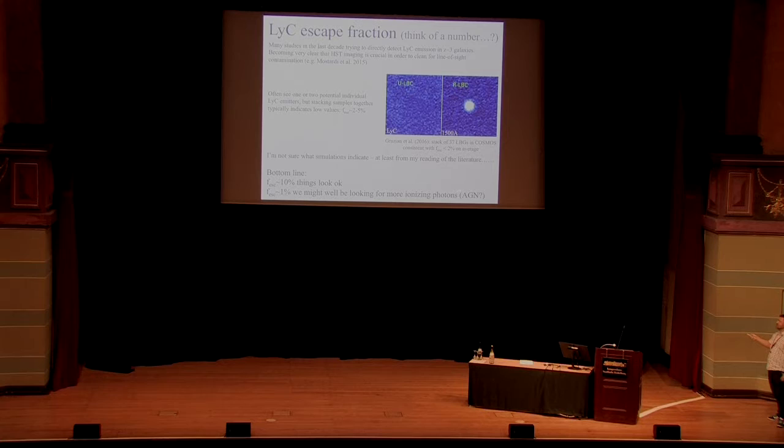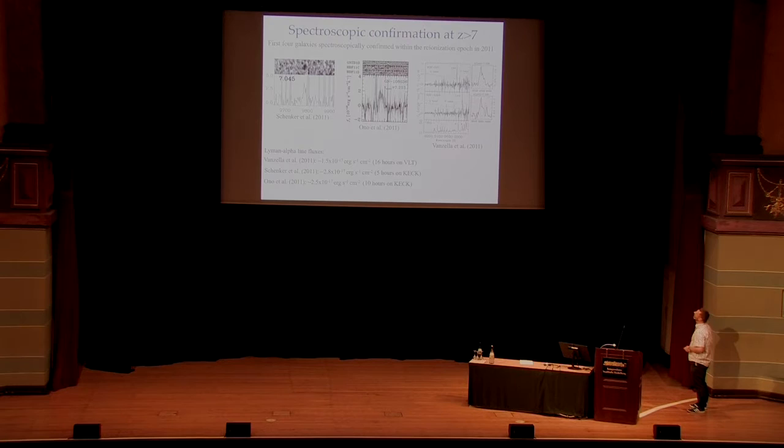If it's as low as 1 percent, we're probably in trouble. And we'll be looking for other sources of ionizing photons. There's been a lot of excitement recently about AGN again at high redshift. I have some slides at the end if people want to ask me about my opinion of that. But possibly we might have to go to AGN though. It doesn't look that likely at the moment.